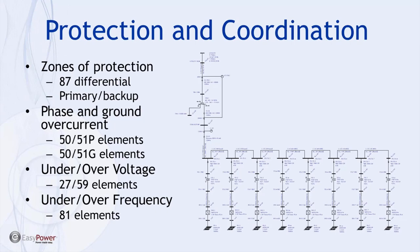For zones of protection, we're primarily representing differential zones and primary backup over-current zones. In EasyPower, differential zones are mostly a visual representation on the one-line, but we can accommodate those clearing times as part of our arc flash analysis module. For under and over voltage and frequency protection, the program doesn't natively simulate these conditions; however, using analysis modules such as power flow or dynamic stability you can get insight into how the system would behave.